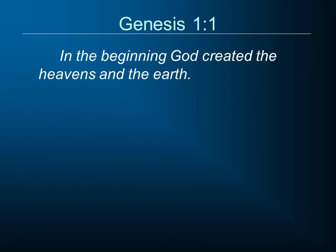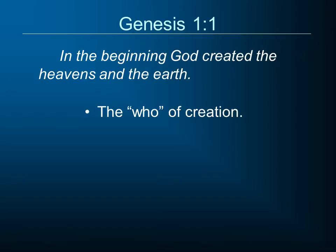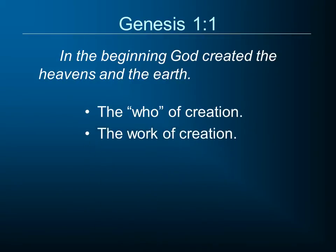Genesis chapter 1 verse 1 begins: 'In the beginning God created the heavens and the earth.' Several things we want to note about this beginning. First, the who of creation — everyone is created and God is the one who accomplishes that. The Bible does not begin with an explanation of who God is or try to give evidences for his existence. It merely assumes that he's there, that he is the pre-existing one, the Lord and sovereign over all creation.